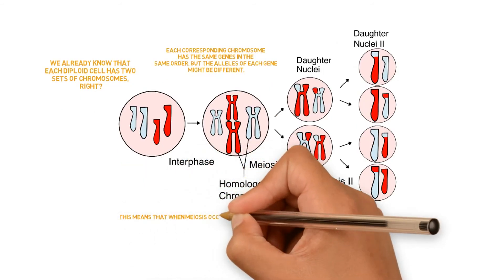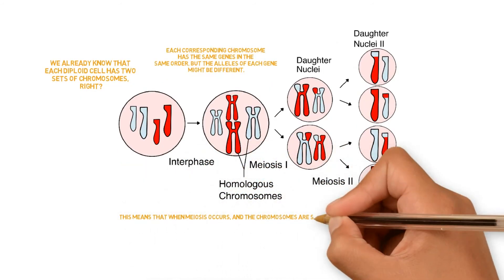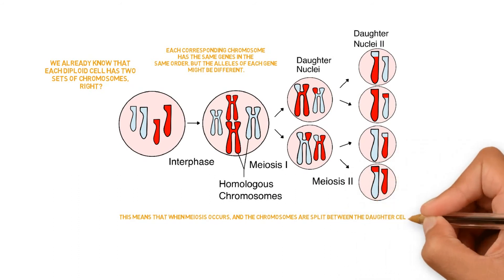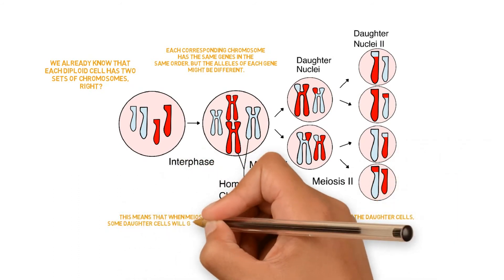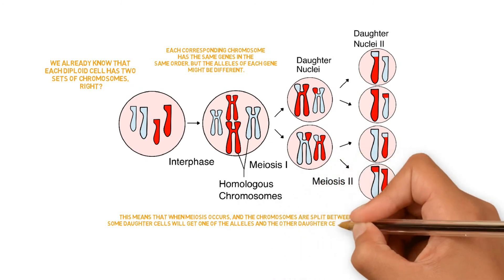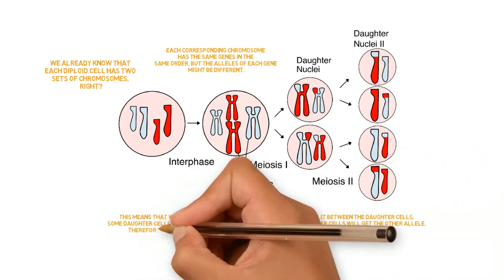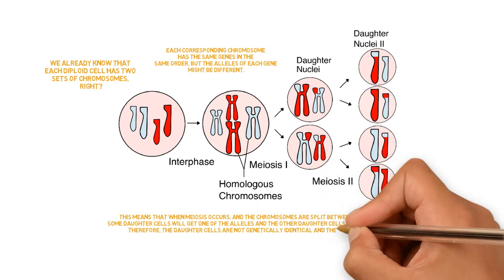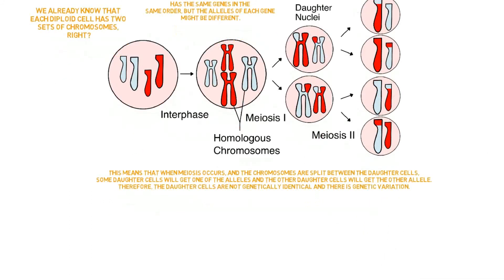This means that when meiosis occurs and the chromosomes are split between the daughter cells, some daughter cells will get one of the alleles and the other daughter cells will get the other allele. Therefore, the daughter cells are not genetically identical and there is genetic variation.